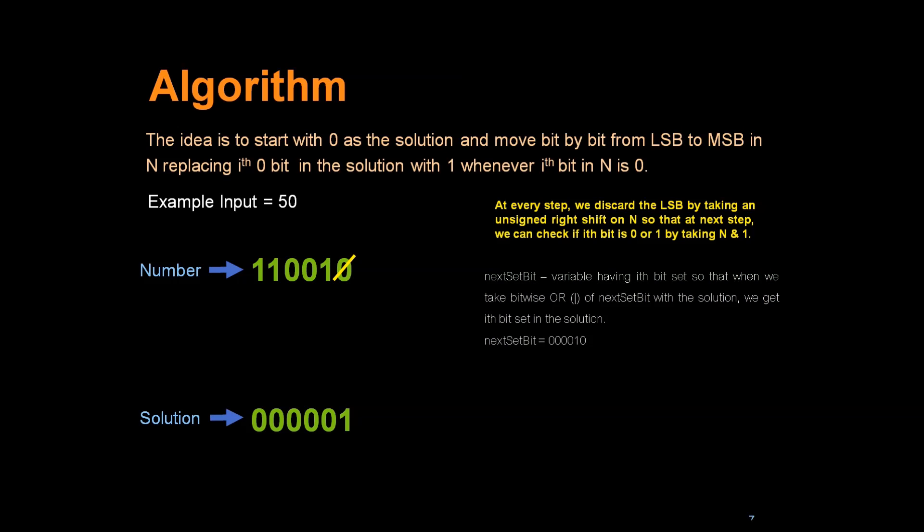Now we will discard the least significant bit. The bits that we are left with is 11001. Basically what we are doing here is we are taking the next bit of the input number. So the next number is 1. Is this 0? No, this is not 0. So we will keep 0 as it is. Left shift next set bit. It becomes 000100.